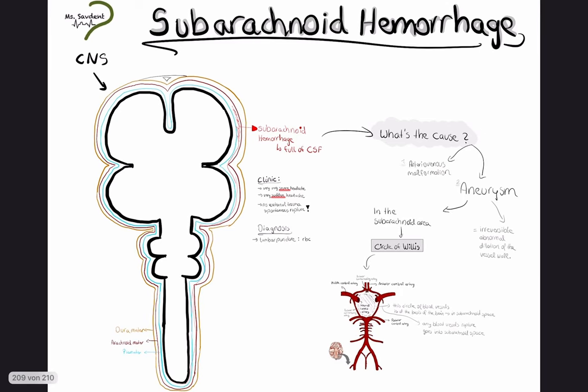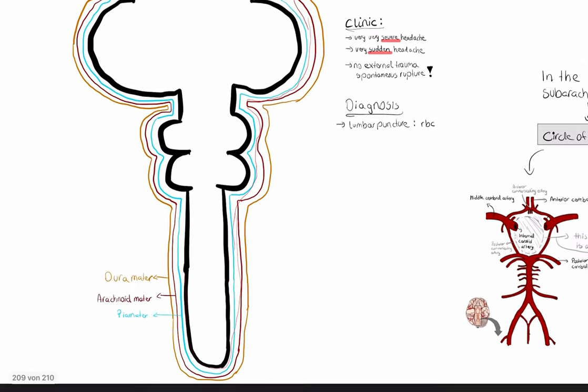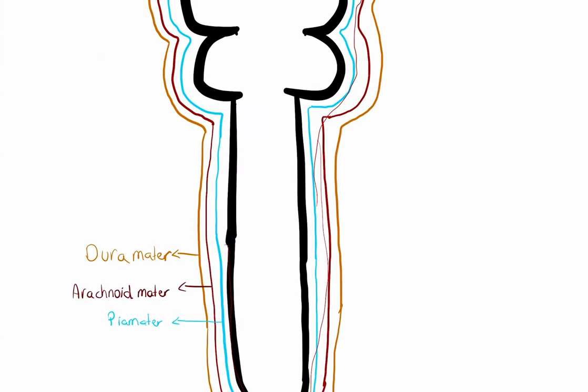This is the CNS, and we can see here three layers. It is composed of three layers on the brain tissue, which are the pia mater, arachnoid mater, and dura mater.